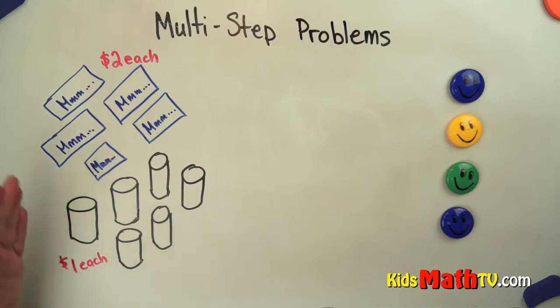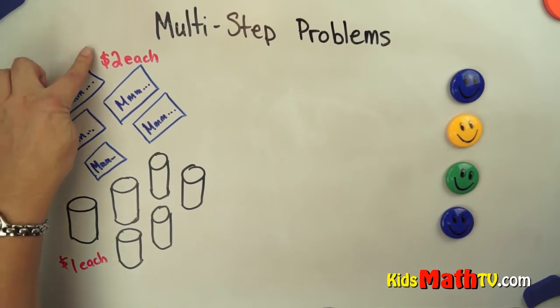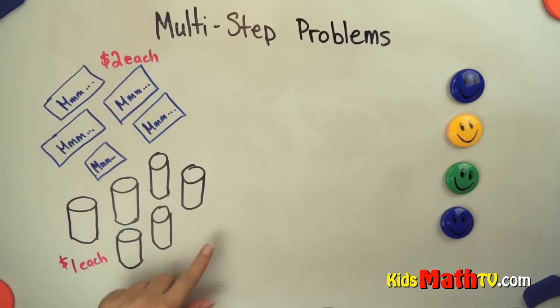They are going to buy five of these candy bars, and these candy bars cost $2 each. And they're buying six of these sodas, and the sodas each cost $1. So we want to know how much does each friend have to pay for all of this.